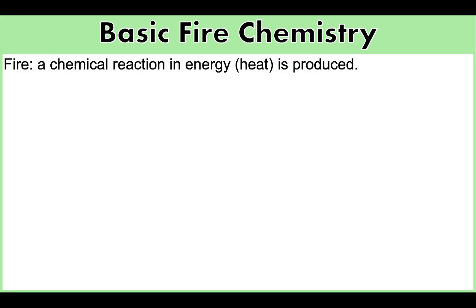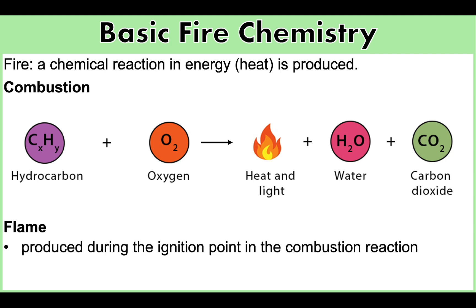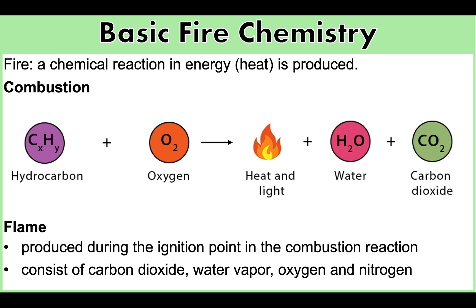What is fire? Fire is a chemical reaction in which energy in the form of heat is produced. This chemical reaction is known as combustion. Combustion occurs when fuel or other materials react rapidly with oxygen, giving off light, heat, and flame. A flame is produced during the ignition point in the combustion reaction and is the visible gases part of a fire. Flame consists primarily of carbon dioxide, water vapor, oxygen, and nitrogen.